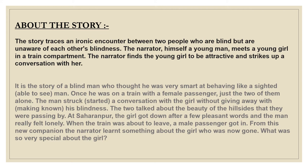The man started a conversation with the girl without giving away his blindness. The two talked about the beauty of the hillsides they were passing by. At Saharanpur, the girl got down after a few pleasant words and the man felt lonely. When the train was about to leave, a male passenger got in. From this new companion, the narrator learned something about the girl. What was special about her? She also was blind, just like the narrator, and she never gave away her blindness either.